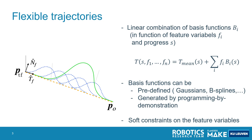These basis functions can be predefined, such as Gaussians or B-splines, but they can also be generated by programming by demonstration. It's also important that we can impose soft constraints on these feature variables that exist in these linear combinations.